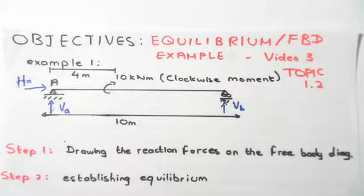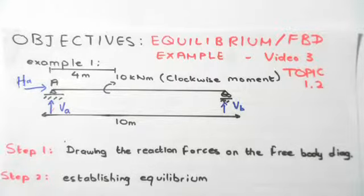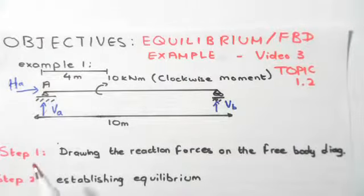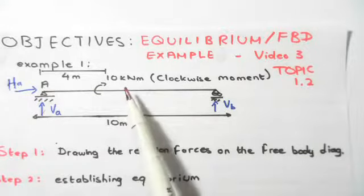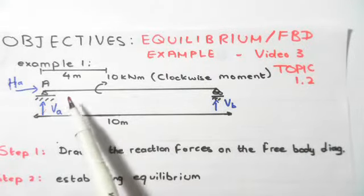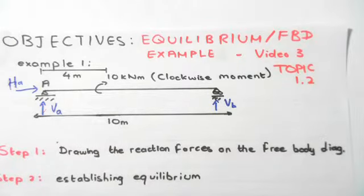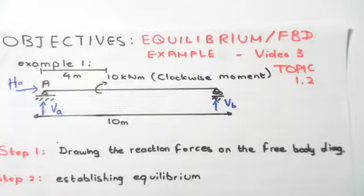A simply supported beam has a pin support and a roller — that's it. The beam has a length of 10 meters. We have a clockwise moment of 10 kilonewton-meters applied four meters from the left-hand pin. We need to work out the reaction forces for this example.